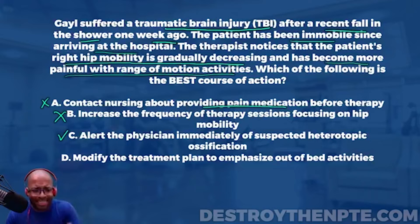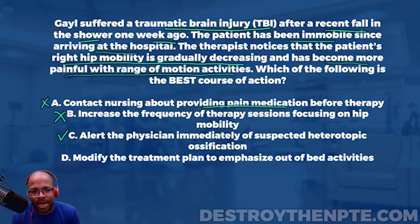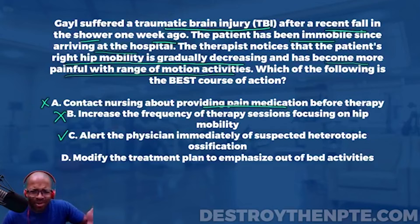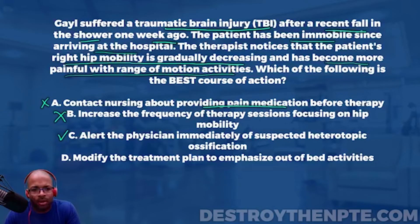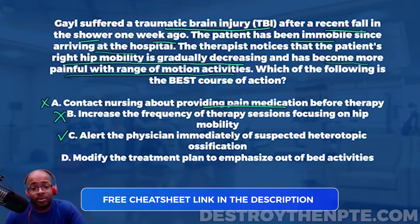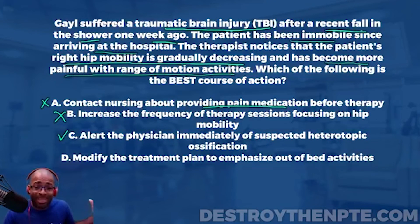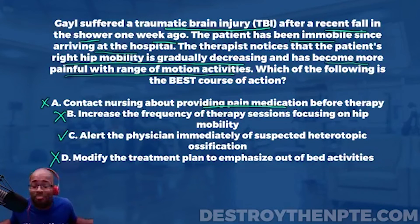Option D says modify the treatment plan to emphasize out of bed activities. I don't like this answer because we don't know enough about the TBI. The patient has been immobile since arriving — is she awake? Is she in a coma? We don't know if it's even recommended that she get out of bed given her current condition. Modifying the treatment plan without that information is not the best approach. Looking at all the answer choices, C is the best answer.